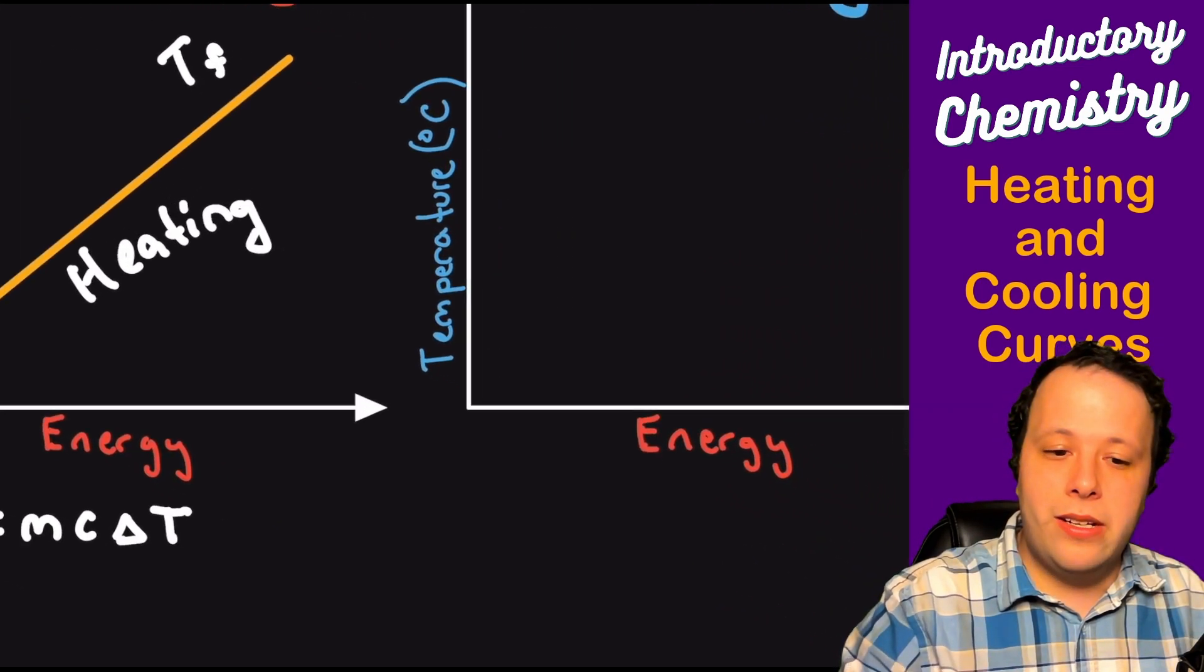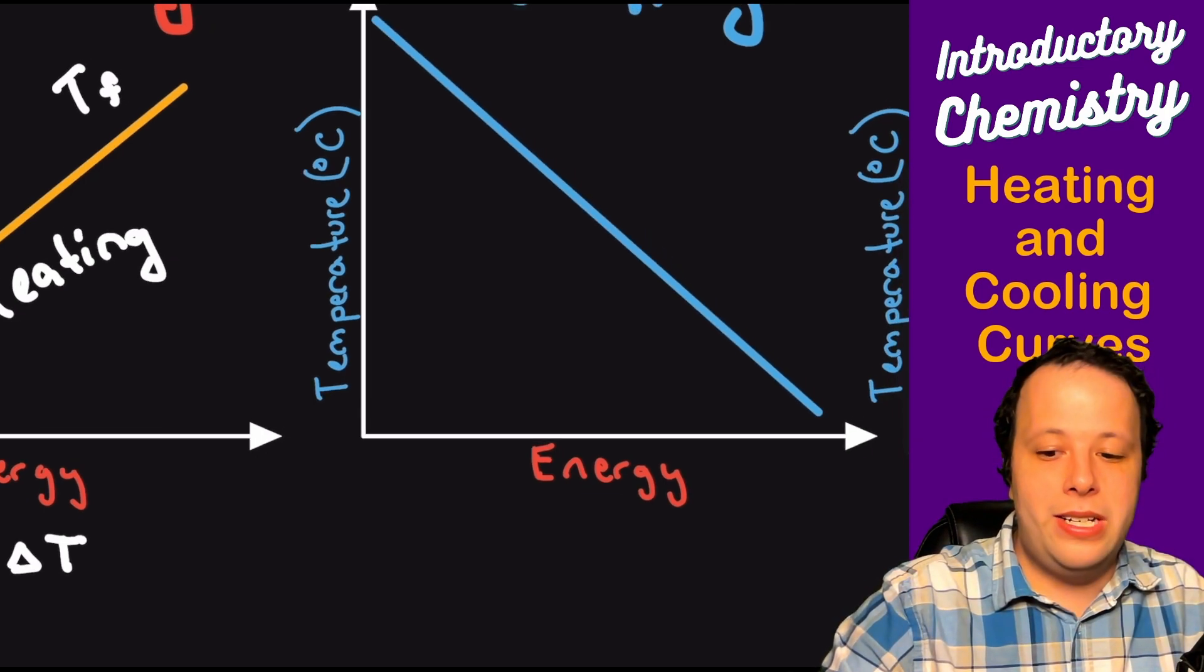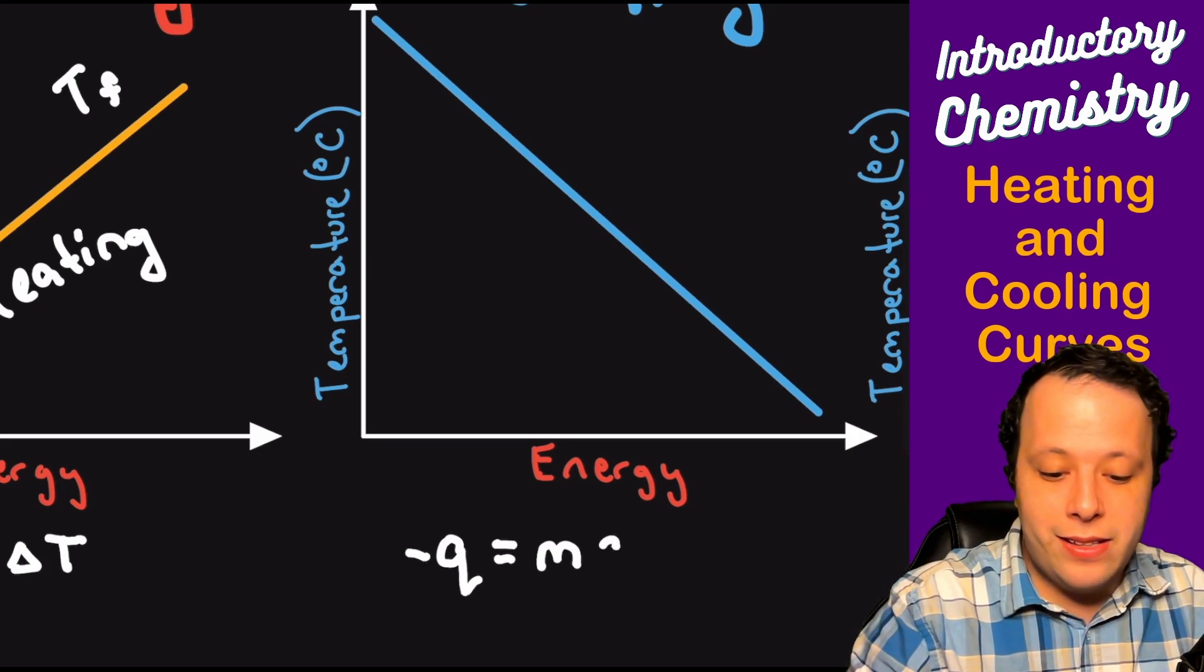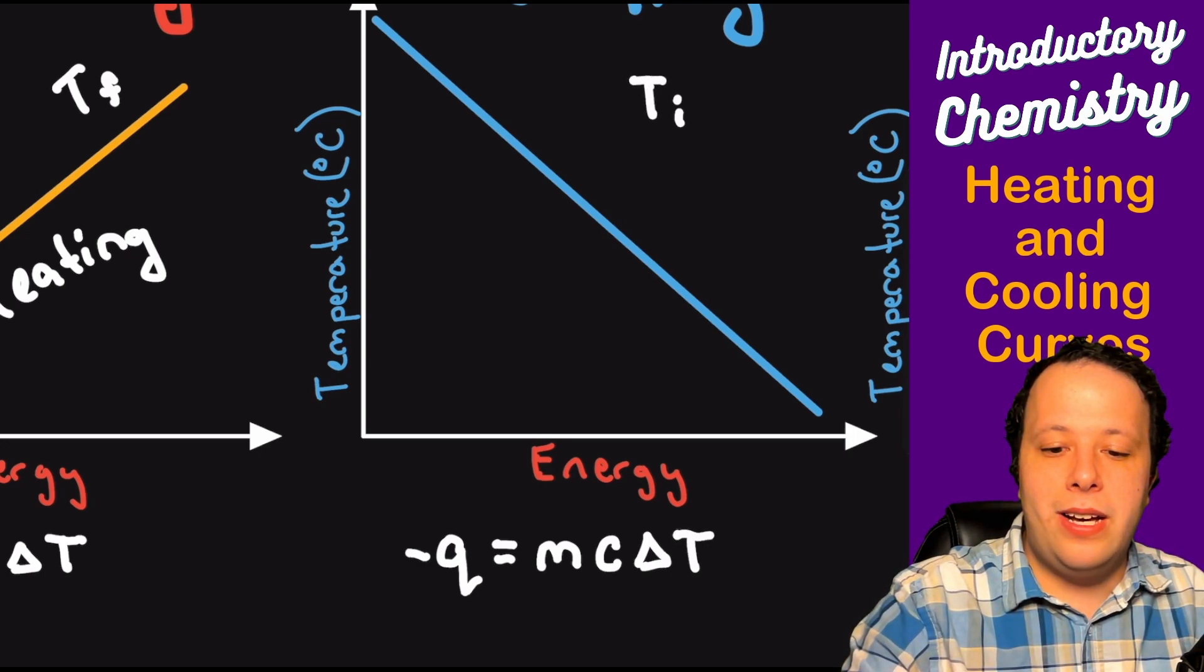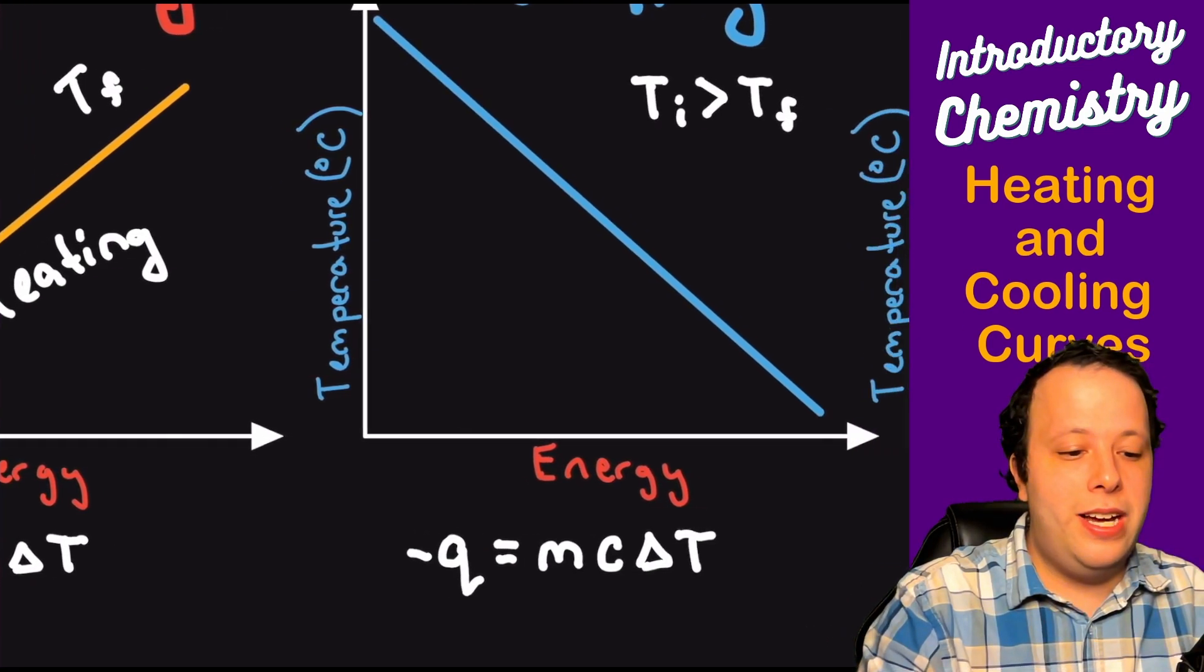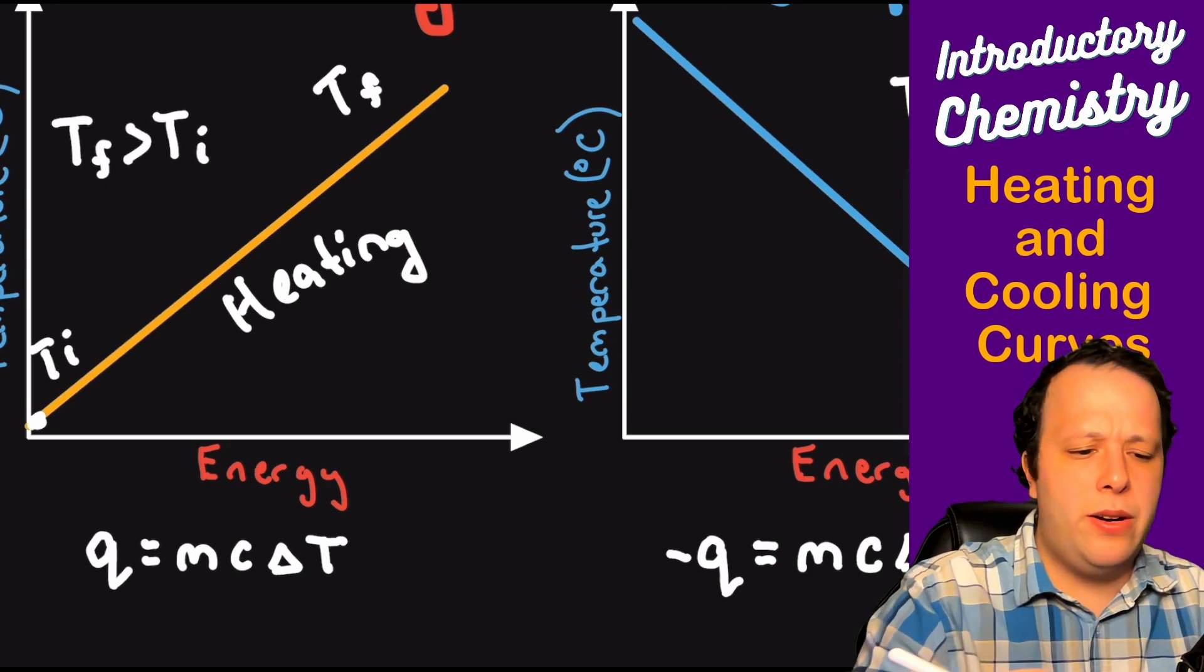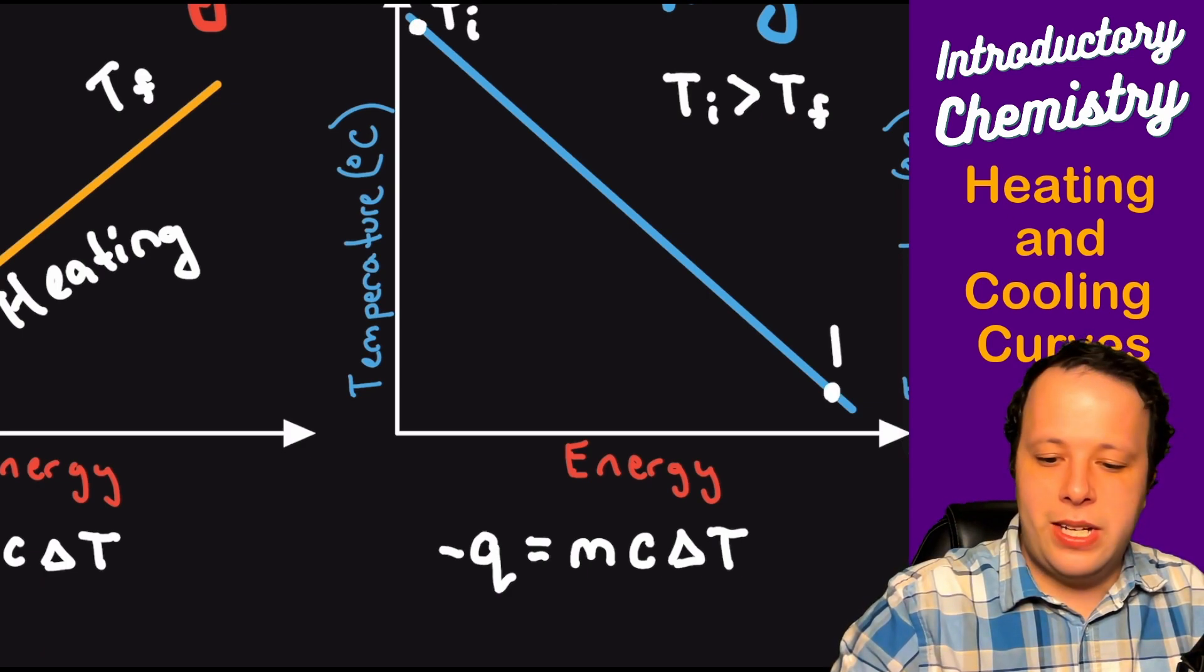Cooling is the exact same idea. We're going to have a slope but instead it's going to go the opposite way, it's going downward as a result. So whenever we have a downward slope generally the Q value turns out negative mathematically. The reason is because your T_i is going to be a lot greater than the T_f so essentially you'll get a negative value from this versus the other one from before where T_f is greater than T_i.